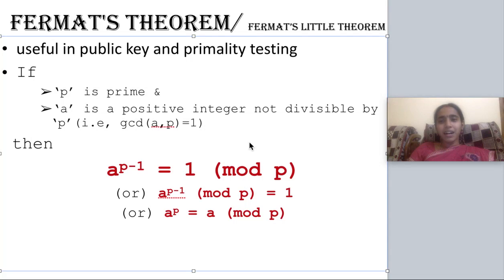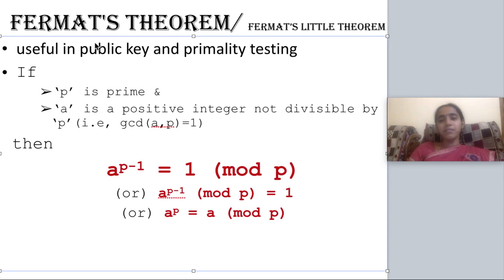Hi friends. Now we are going to see Fermat's Theorem and Euler's Theorem. Let us start with Fermat's Theorem. Fermat's Theorem is otherwise called Fermat's Little Theorem. This theorem is widely used in public key cryptosystems and in various methods like primality testing. So let us see the theorem.